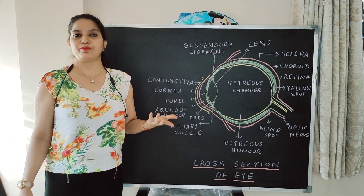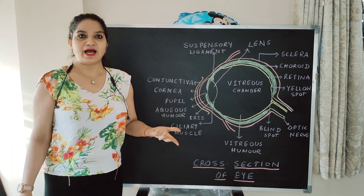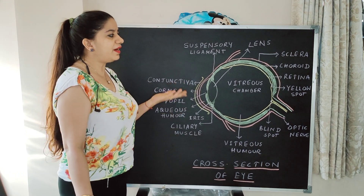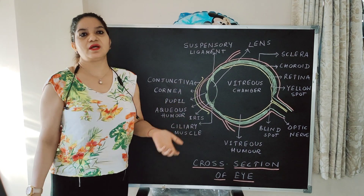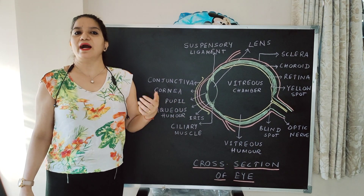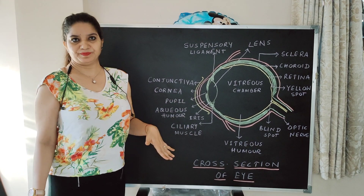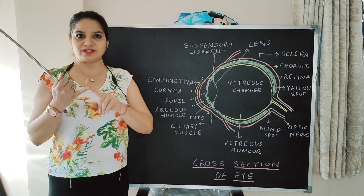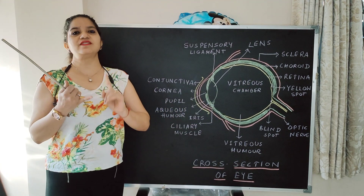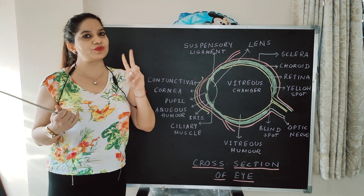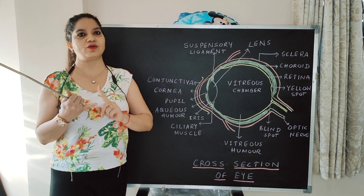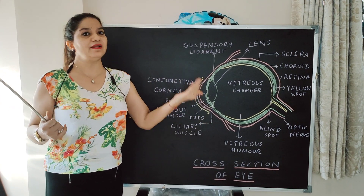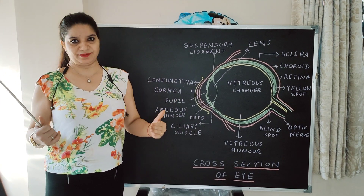Cones are sensitive to bright light and they give color perception. Cones have another pigment which is iodopsin. So the innermost layer is retina, richly supplied with sensory cells. The two cells are rods and cones, and the two pigments are rhodopsin and iodopsin.